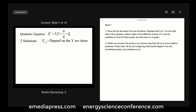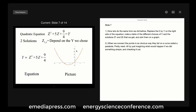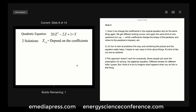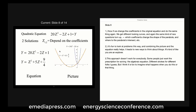Now let's do the same trick we did before — replace the 0 by Y on the right side of the equation, make a table of different choices of Y and the solutions z1 and z2 they create, and plot them on a graph. When we connect the points in an obvious way, they fall on a curve called a parabola. Pretty neat. If we change the coefficients in the original equation and do the same thing again, we get different looking curves, and the same kind of new questions pop up — which coefficients change the shape of the parabola and how, and where do the parabolas intersect.